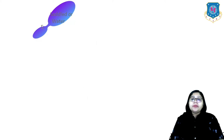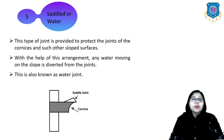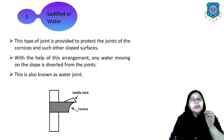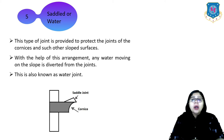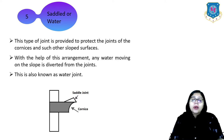The fifth type is the saddle or water joint. This type of joint is provided to protect the joints of cornices and other sloped surfaces. With this arrangement, any water moving on the slope is diverted from the joints. This is also known as the water joint.